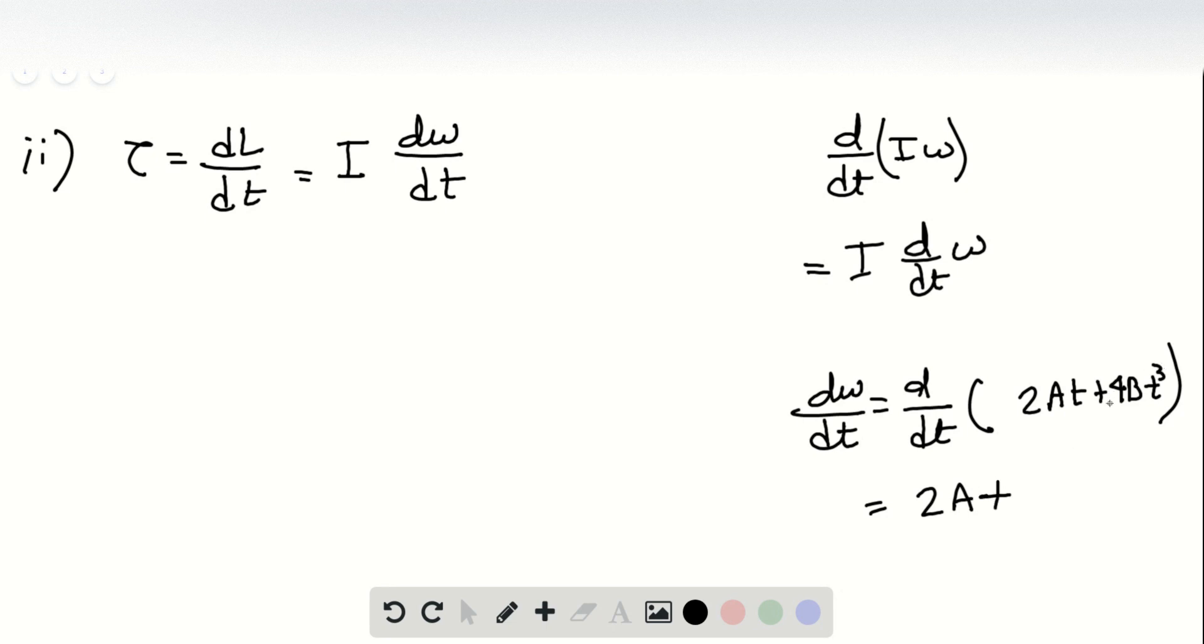Then 3 will come in front of 4, so 3 times 4 gives us 12B. Then t gets reduced by 1 power, so 3 minus 1 gives us 2, so this is t squared, right? Again, we know A, B, and t. T at 3 seconds,